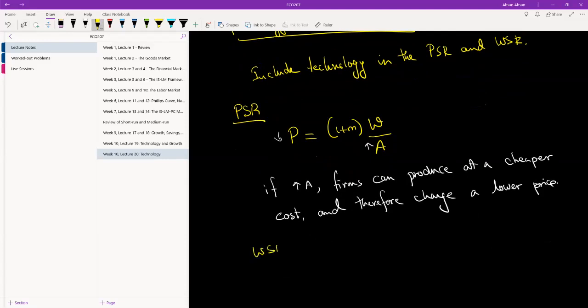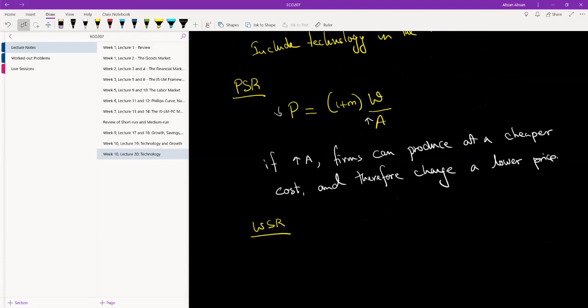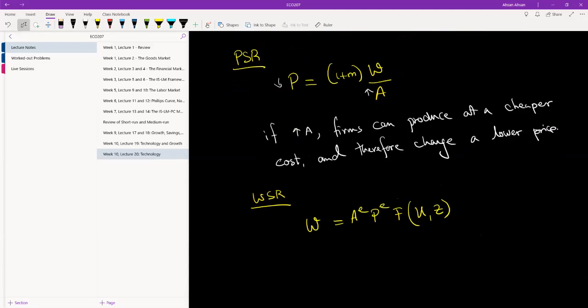And at the wage setting relation, what we had was wage equals expected price and a function of unemployment and all other factors. And what we are going to do to include technology here is add A. And just like PE is expected price, A is going to be expected technology.